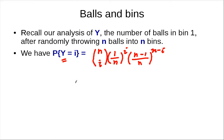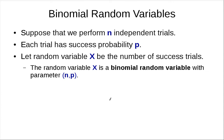Both examples contain a binomial coefficient and look very similar. They occur very frequently, so we give it a name: the binomial random variable. Suppose we perform n independent trials where each trial has success probability p, and let x be the number of successful trials. Then x is called the binomial random variable with parameters n and p, where n is the number of trials and p is the success probability.